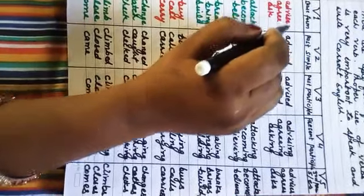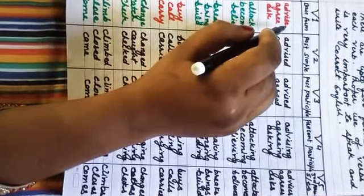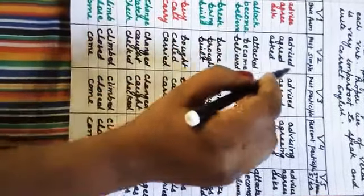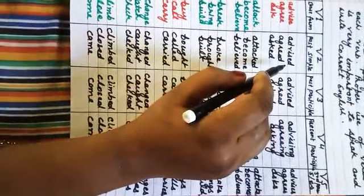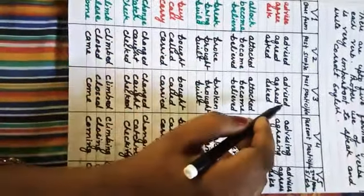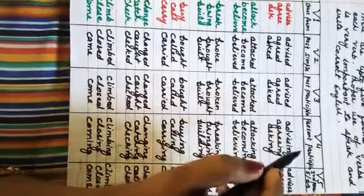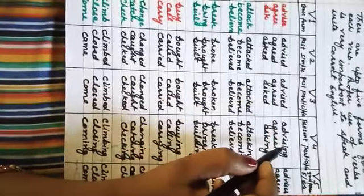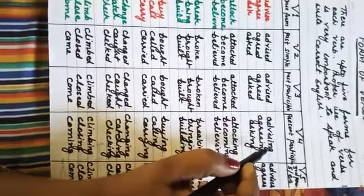Advise — meaning 'salah dena' (to give advice). Second form: advised. Third form: advised. Fourth form: advising. Fifth form: advises.